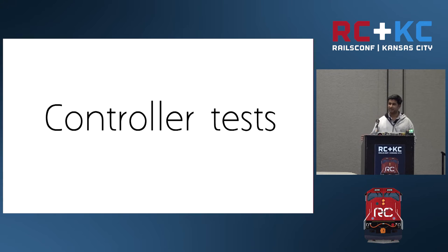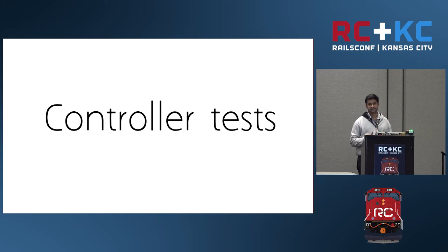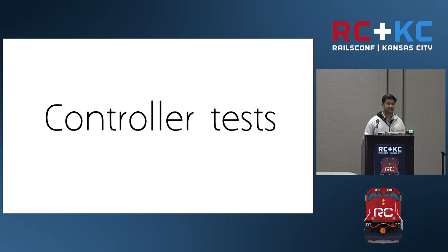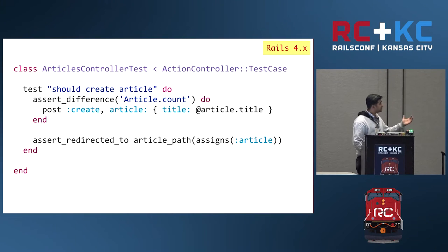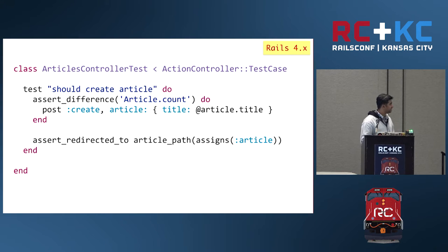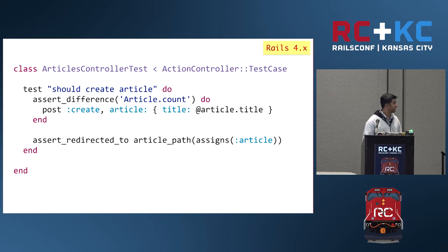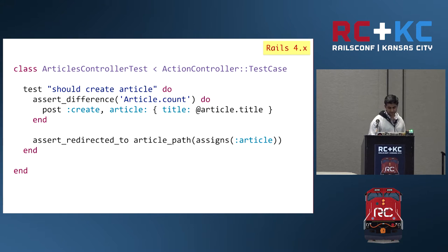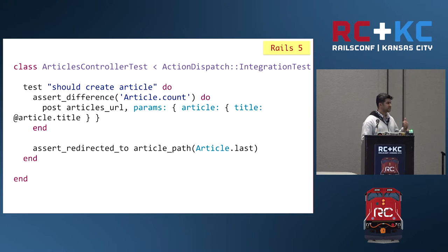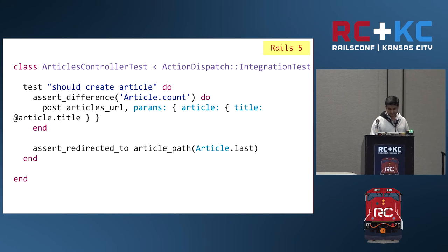So that was all about running tests. Now we'll move to the second part where we see what things have changed about writing tests. One of the significant changes is related to controller tests. This is a typical controller test from Rails 4 — we test that an article gets created, we post to the create action, pass some article params, and check whether we get redirected to the new article page. In Rails 5, if we scaffold-generate this test, it will look different, and we'll go through those changes one by one.